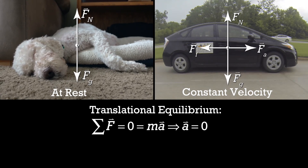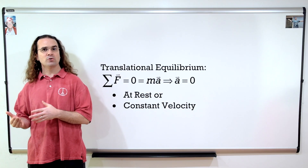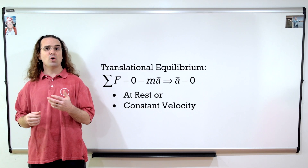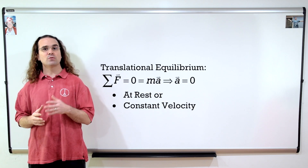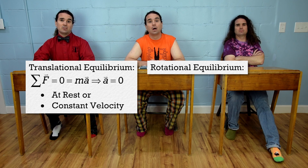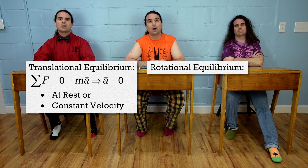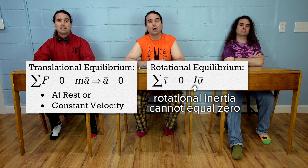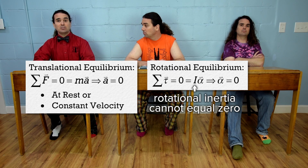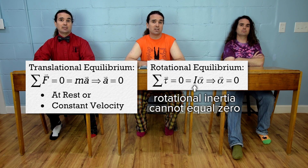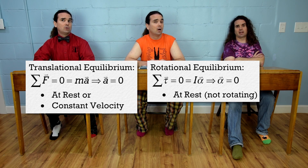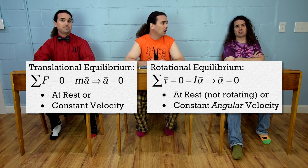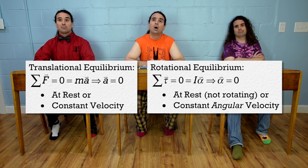Okay, that is translational equilibrium. Billy, please take what we just reviewed about translational equilibrium and apply it to rotational motion to determine when an object is in rotational equilibrium. Well, I bet we start with the rotational form of Newton's second law of motion, only we set it equal to zero just like we did for translational motion. The net torque acting on an object equals zero, which equals rotational inertia times angular acceleration. That means the angular acceleration of an object in rotational equilibrium equals zero. Rotational equilibrium is just like translational equilibrium, only rotational.